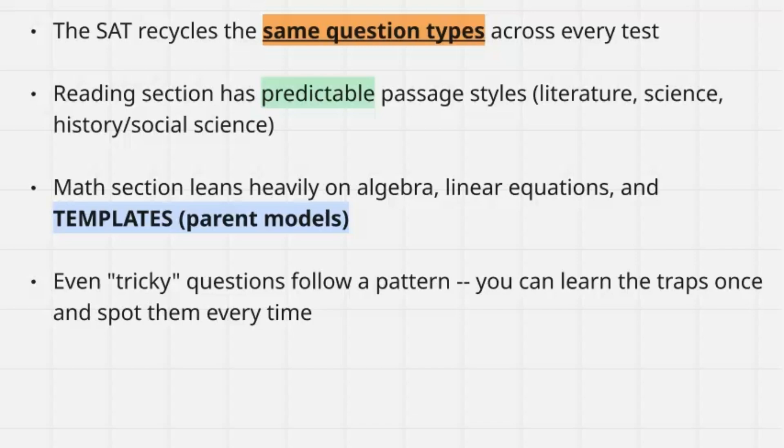In essence, they have templates. They have a parent model where they say, this is the concept we want to test these kids on, and then we have this parent model which is like the overarching basis of the question. Then they create multiple variations of it and do a bunch of testing to see what actually gets approved. Because of that, a lot of the questions are going to be very similar to each other because they're based off quite literally a template. So they can make tons of questions and test different kids without having 60,000 overlaps.